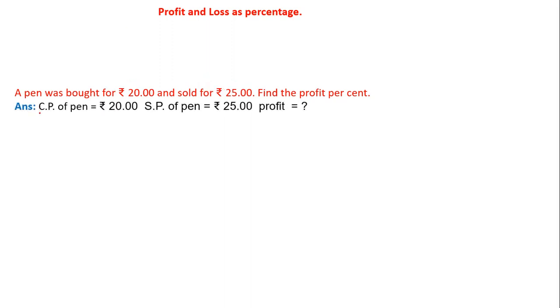So first we will write the given data. Cost price of a pen is equal to rupees 20, selling price of a pen is equals to rupees 25, profit equals question mark. We know two formulas: one is profit equals selling price minus cost price, another one is loss equals cost price minus selling price. Here we need to find the profit percentage.